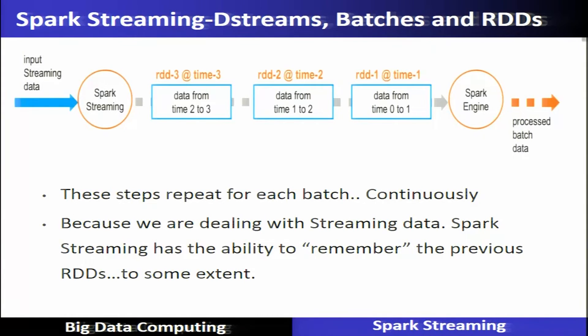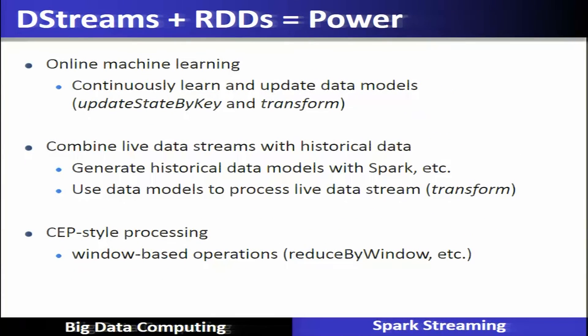To summarize DStream, batches, and RDDs: whenever input streaming data arrives, the Spark streaming system divides it into batches of one-second duration in this example. These batches undergo various transformations and actions and are given back to the Spark engine for output. These steps are repeated for each batch continuously, since we are dealing with streaming data. Spark streaming also has the ability to remember previous RDDs to some extent.